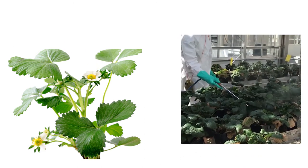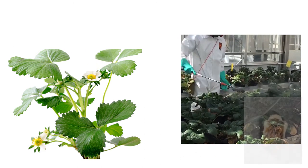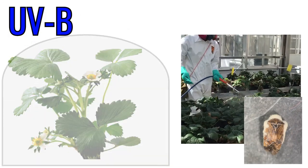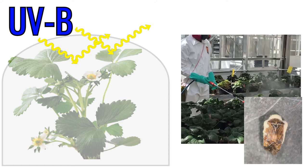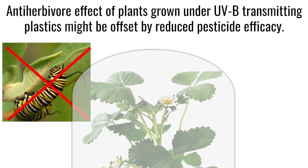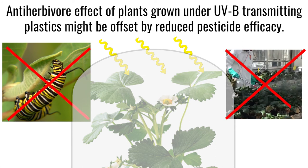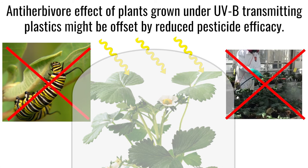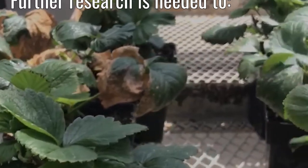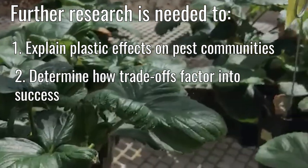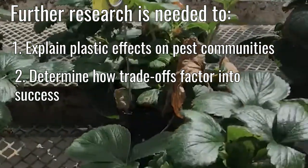If pesticides are being applied for pest control, and especially pathogens for biocontrol, a film blocking UVB may be more beneficial than a plastic transmitting UVB. Thus, the anti-herbivore effects of plastics grown under UVB transmitting plastics might be offset by reduced efficacy of pesticides and insect pathogens. Further research is needed to explain plastic effects on pest communities and how possible trade-offs factor into overall success of this system.